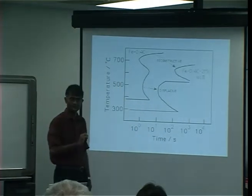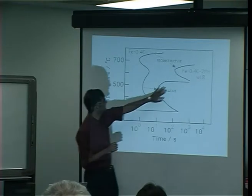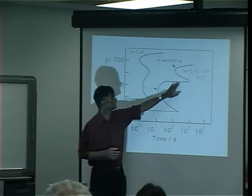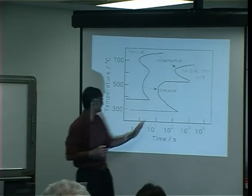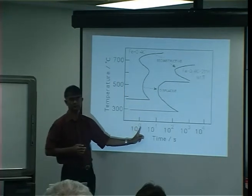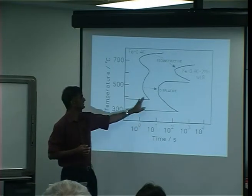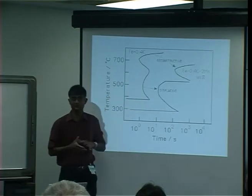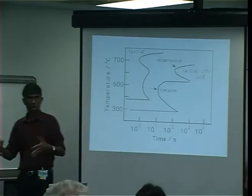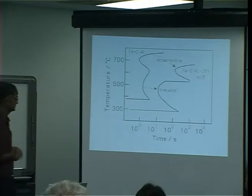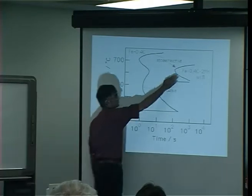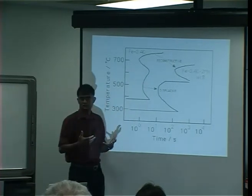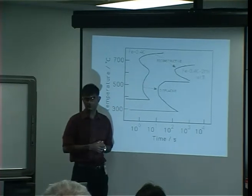When the reaction rates get fast, there will be an overlap because our experiments cannot detect the separation between the two curves. The experiments simply can't cope with fast reaction rates, so we see a single curve, but in fact it consists of two regimes which we can separate by calculation. Published TTT diagrams don't always show these two separate C-curves — they often just show a single curve which is a consequence of overlap.